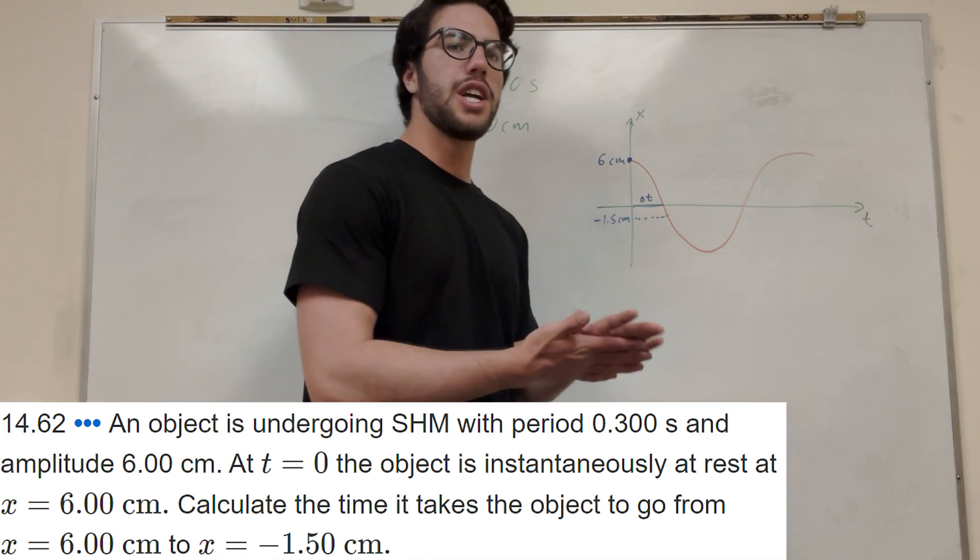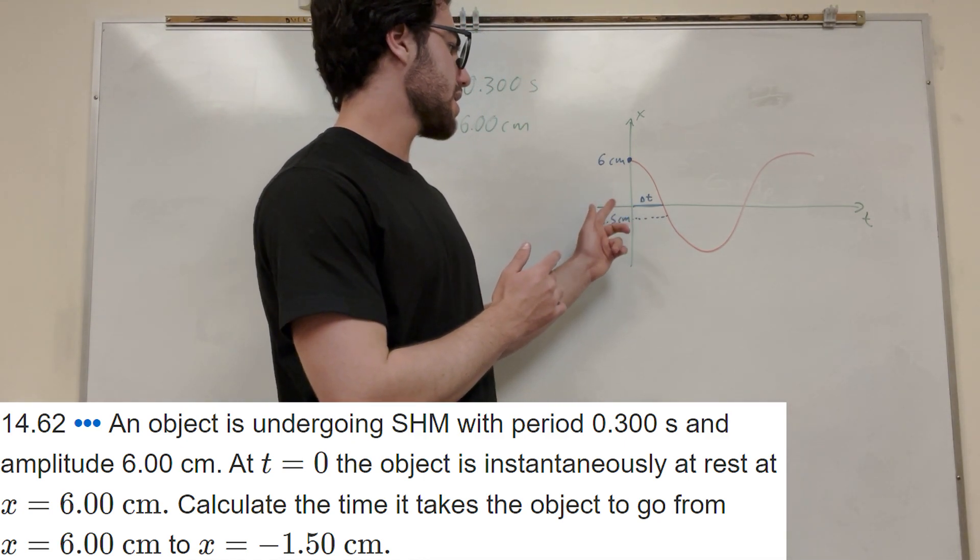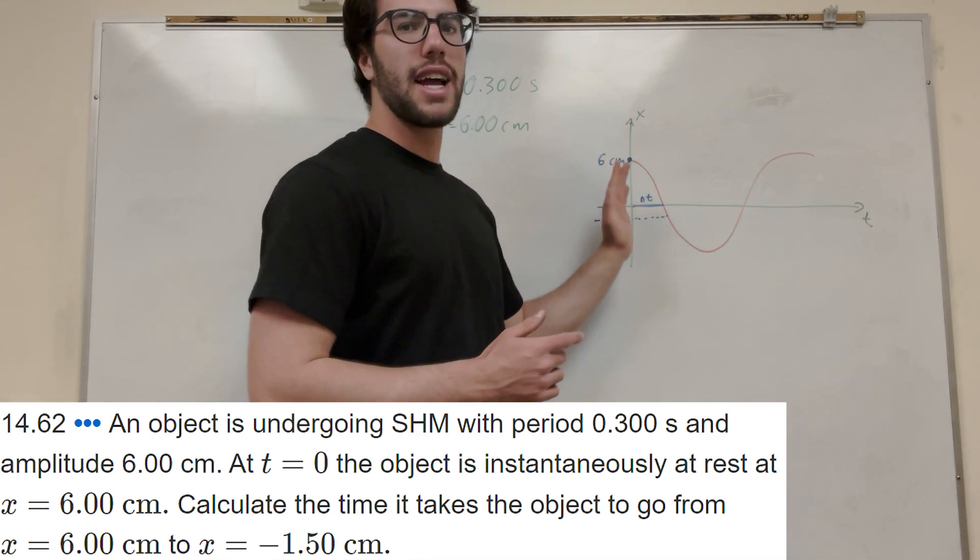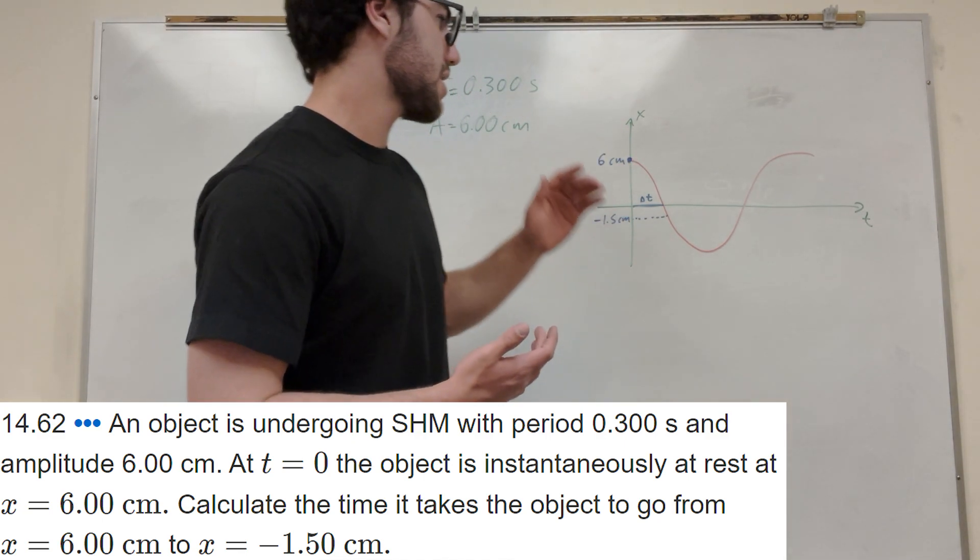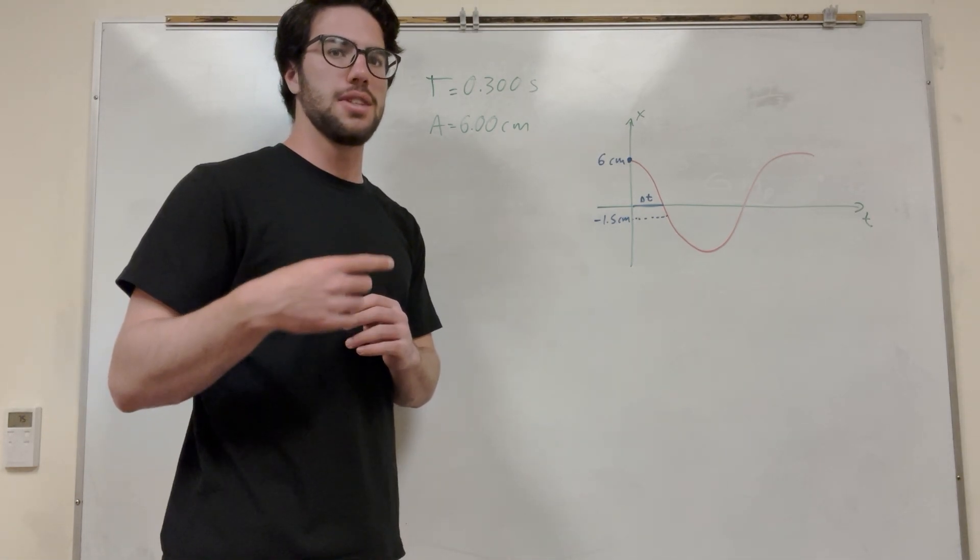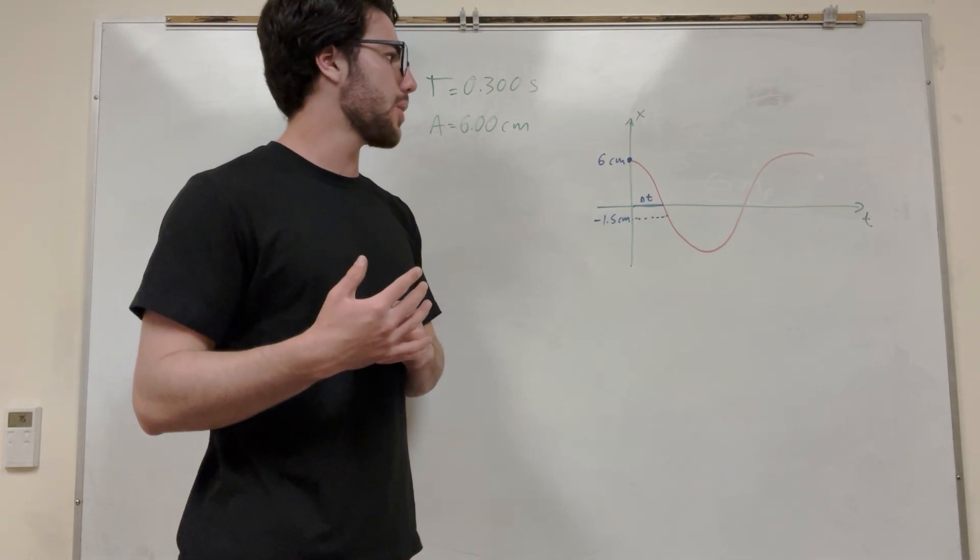So here we go, we have an equation, or we have this graph here that looks like time and its x position. And it says at time zero, its object is instantaneously at rest. So if something is instantaneously at rest, that means its velocity is equal to zero at that point.